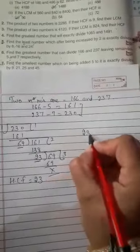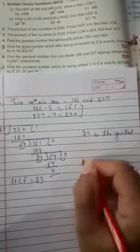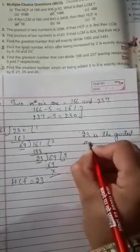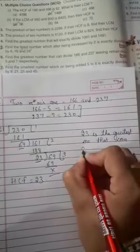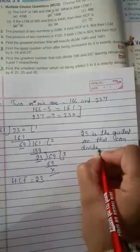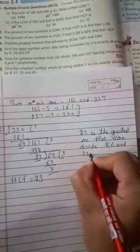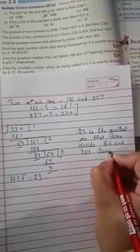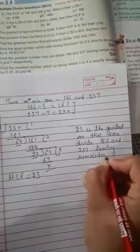Now 23 is the greatest number that can divide 166 and 237 leaving remainder 5 and 7 respectively.